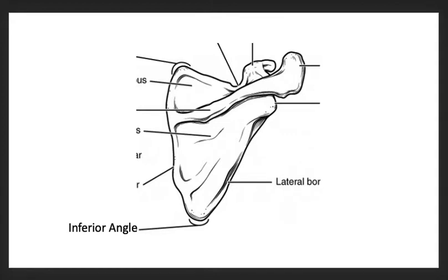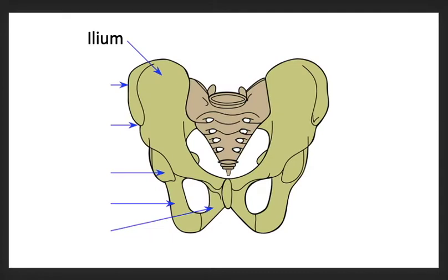Next is the pelvic girdle, which consists of the ilium, iliac crest, iliac spine, acetabulum, ischium, and pubis.